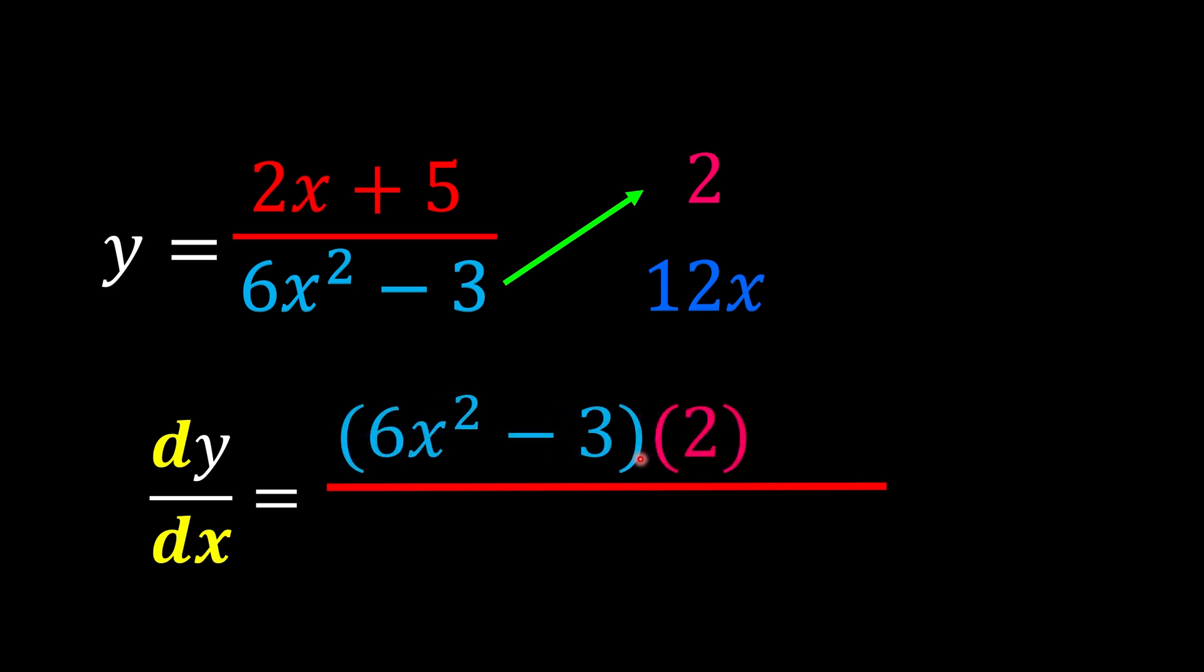Since this is a quotient rule, it's going to be minus. So minus the second couple, which is 2x plus 5 times 12x. After bringing it down, put inside the bracket. Then the one last thing that we're going to bring down is 6x squared minus 3.